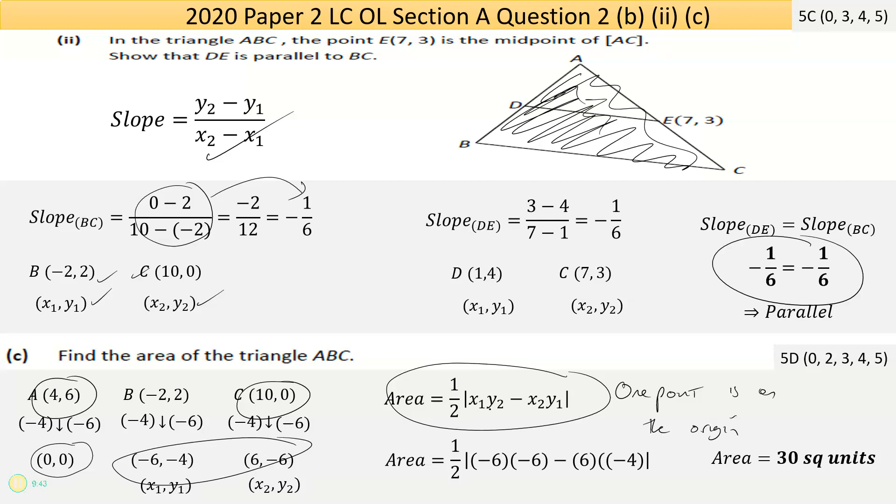With the two points I find, I can call them x1, y1, x2, y2 for the formula. These bars here mean absolute value, so even if your answer is negative, you turn it positive. You can't have a negative area. So it's a half times x1 times y2 take away x2 times y1. Minus 6 times minus 6 take away 6 times minus 4. Multiply them out, put it to the calculator, make sure it's a positive answer. That's 30 square units.